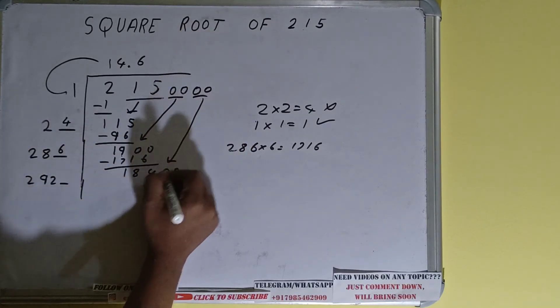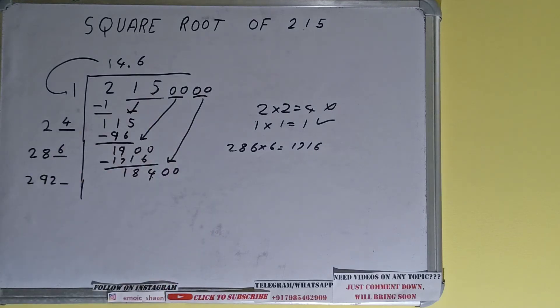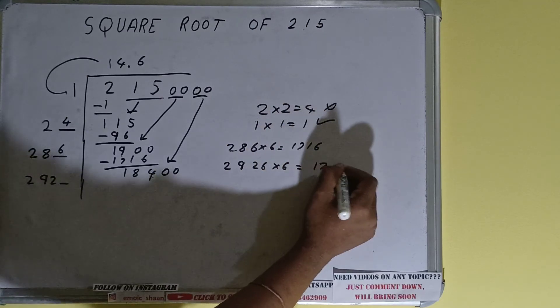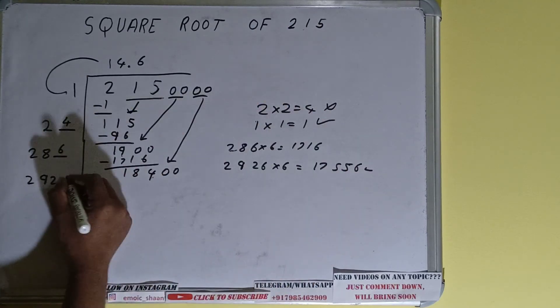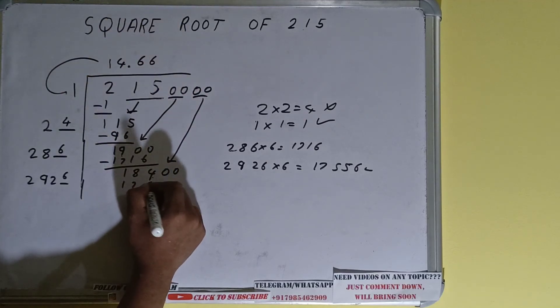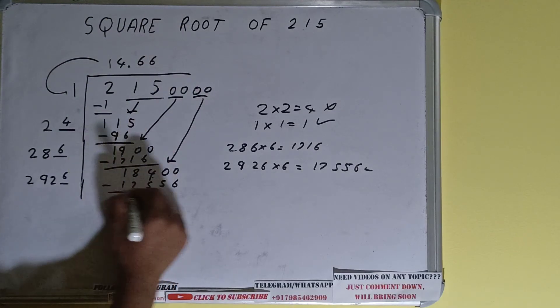We need to bring one more pair of zeros down to make the number big and number will become 18,400. Now we can try six times. So 2926×6 we can try, it will be 17,556 which is good to take. So six here and six here, 17,556. Subtract it and we'll be left with 844.